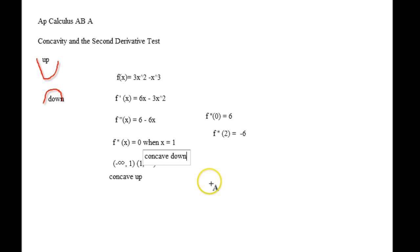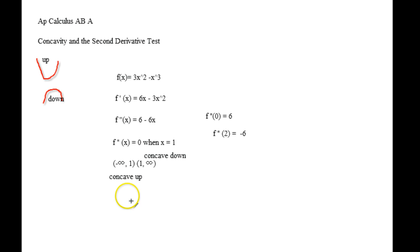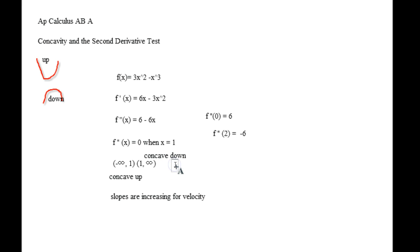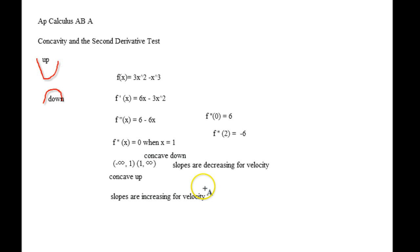Back in the day, this was how you drew graphs — you had to use this information to figure out: is this concave up, is this concave down? You could actually draw a graph this way. Concave up is telling you the slopes are increasing — that's like increasing velocity. Concave down tells you the slopes are decreasing for velocity, whether they're positive or negative depends on where it's at.